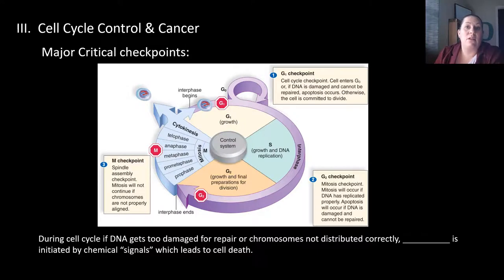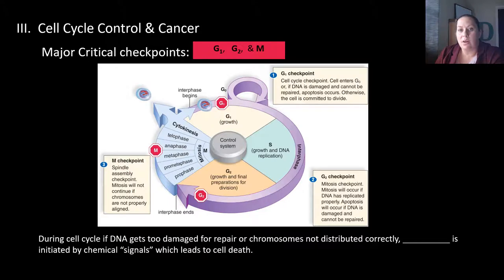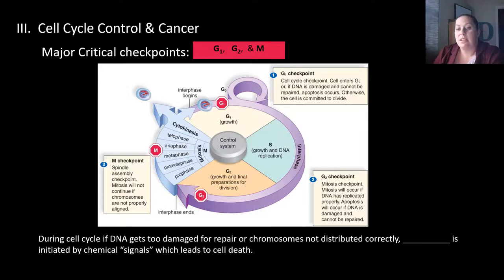There are some major critical checkpoints cells have to pass to continue through the cell cycle, shown as stop signs on the diagram: G1, G2, and M checkpoints. At the G1 checkpoint, the cell enters G0 or stops if the DNA is damaged and cannot be repaired — we don't want cells with damaged DNA to keep dividing. At the G2 checkpoint, they check whether the cell can go into mitosis, verifying the DNA has been replicated properly. If not, the cell is removed.